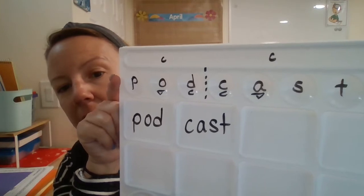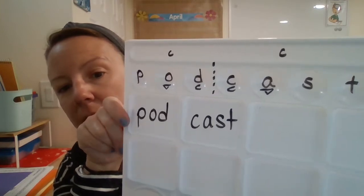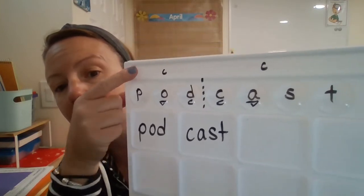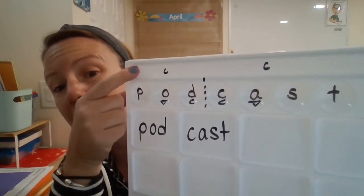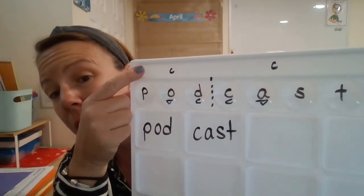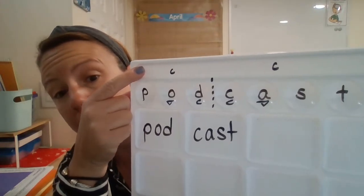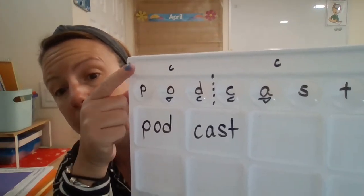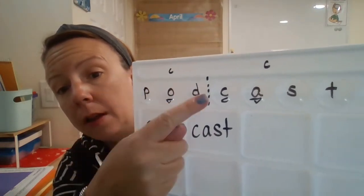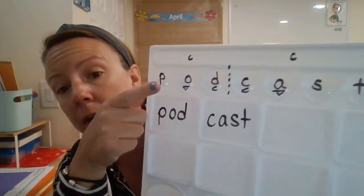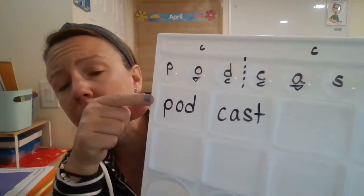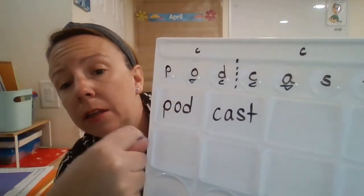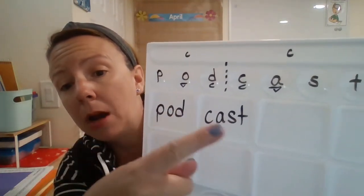I wrote the word there and identified the vowels and the consonants. Then up here in this section, you could label the syllable types — so two closed syllables, the line of division there — and then 'podcast,' and then read it: 'podcast.'